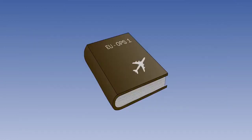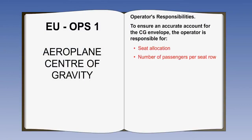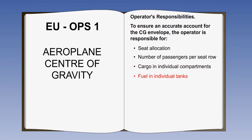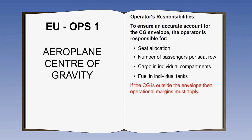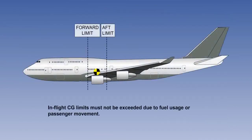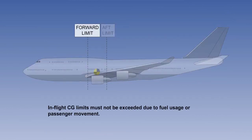EU Ops 1 requires the operator to ensure that the operational centre of gravity envelope accurately accounts for allocation of passenger seats, the number of passengers per seat row, cargo in individual compartments, and fuel in individual tanks. If the operator cannot fulfil these requirements, operational margins would have to be applied. An example is where an operator allows free seating — in this case, the crew would have to take corrective action to prevent centre of gravity limit exceedance. The in-flight centre of gravity must also remain within the operating limits, accounting for passenger movement and fuel consumption.